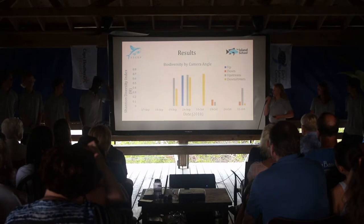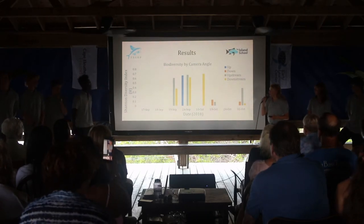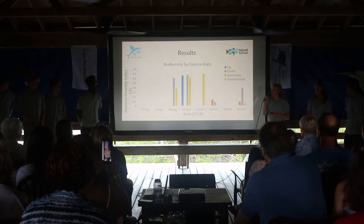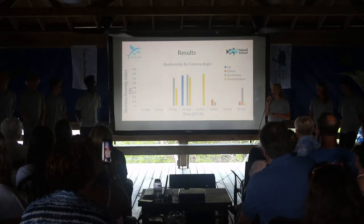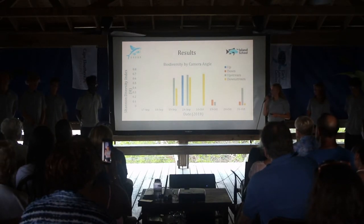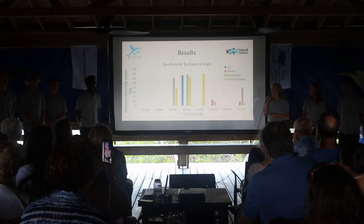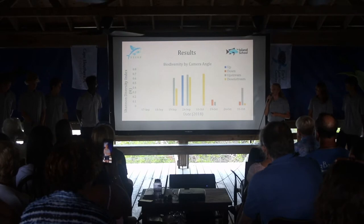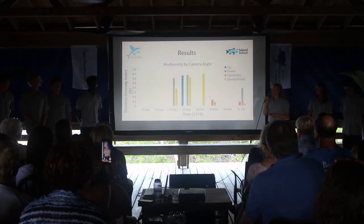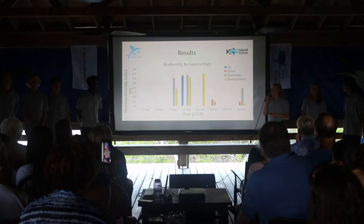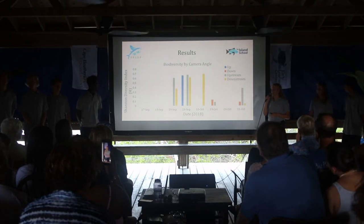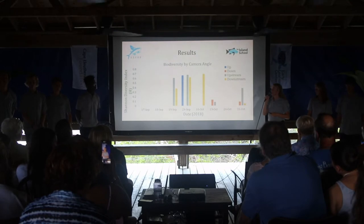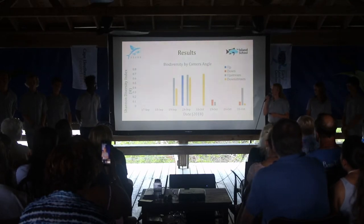Using that data, we analyzed the videos to determine the total biodiversity surrounding our FAD. We use a method called the Shannon Diversity Index — a natural logarithmic formula that uses species diversity and relative abundance to calculate total biodiversity. Species diversity is the number of species, and relative abundance is the number of individuals of each species. As the Shannon Diversity Index increases, so does the biodiversity.